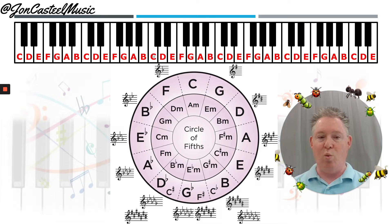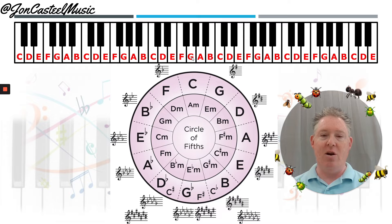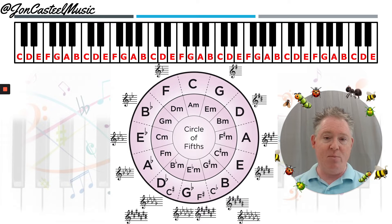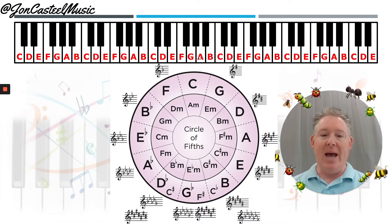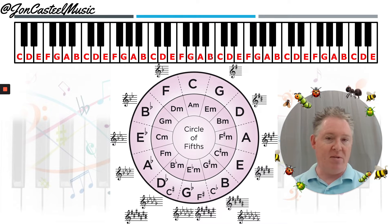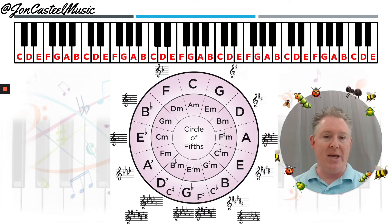So what we can observe here on the circle of fifths chart is for the key of C, we have learned that C, F, and G are the three major chords for this particular key of music. And then D, E, A, and B are the minor chords that fall into the configuration of chords for this particular key.